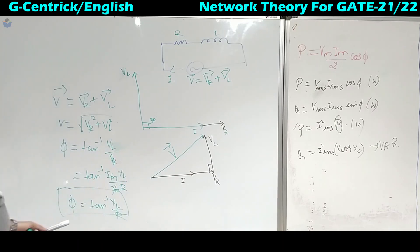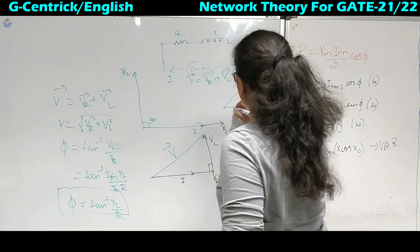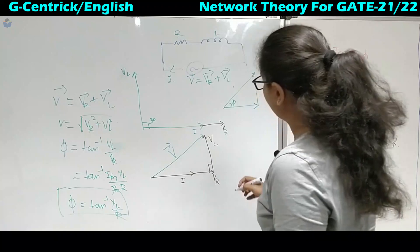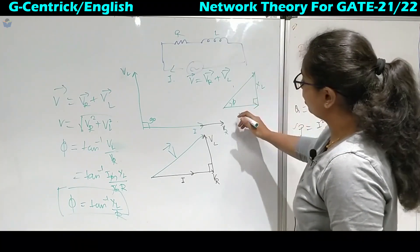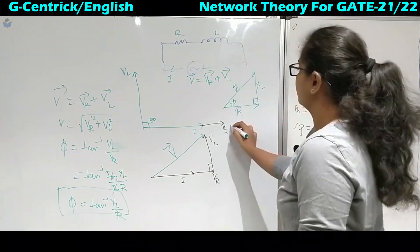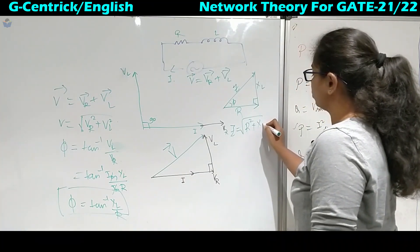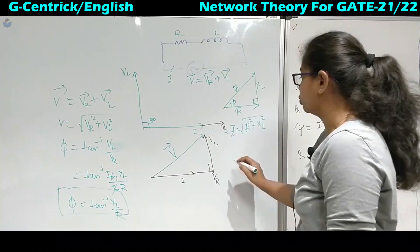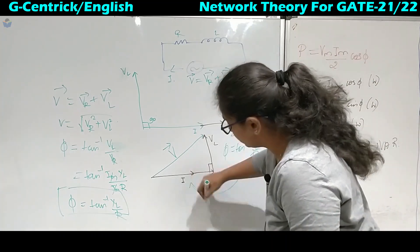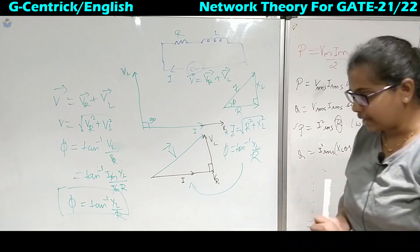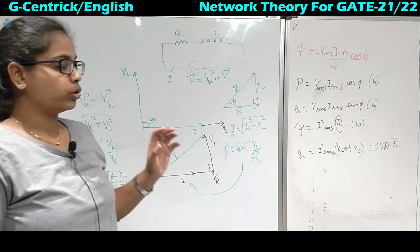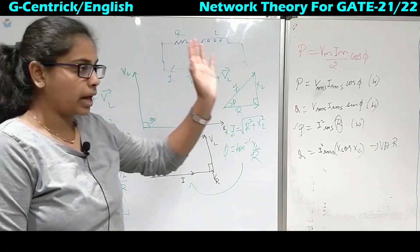This triangle represents the impedance triangle: XL is 90 degrees lagging and R is the real part in phase. The angle phi gives Z = √(R² + XL²), and φ = tan⁻¹(XL / R). This is the RL circuit phasor diagram. In the next lesson we will see RC, then RLC series, and then their parallel combination.